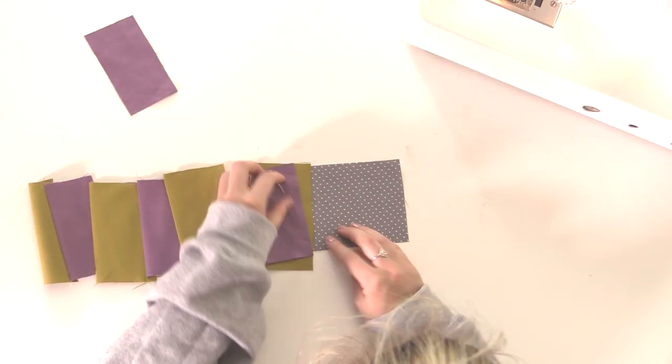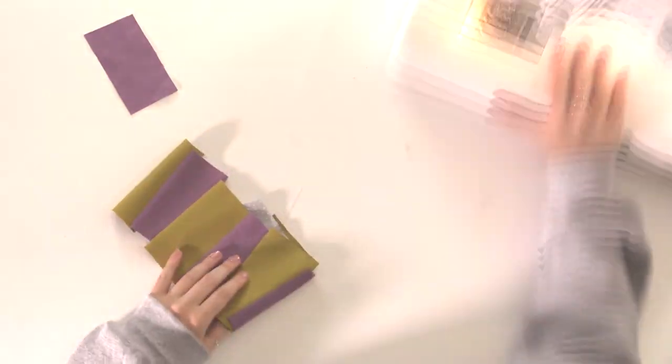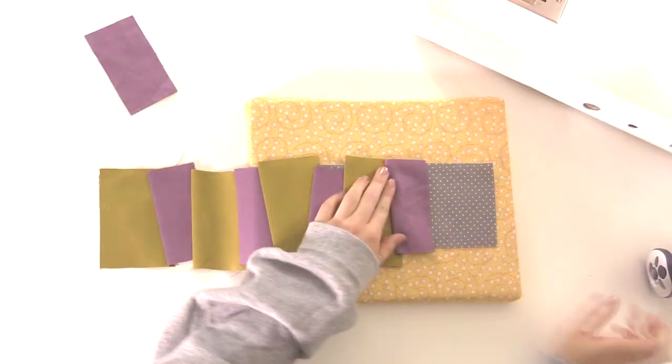If you put them at all different angles, it gives a nice wonky effect, but you can do yours straight if you want. And like I said, my scrap piece was a bit too long, so I've just trimmed down the edge of it.